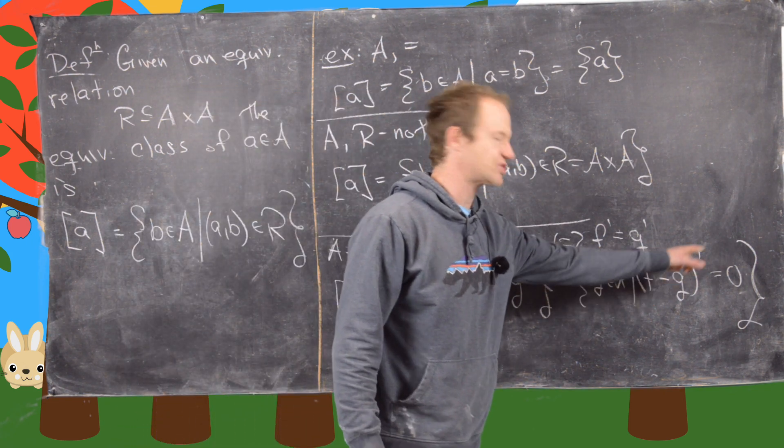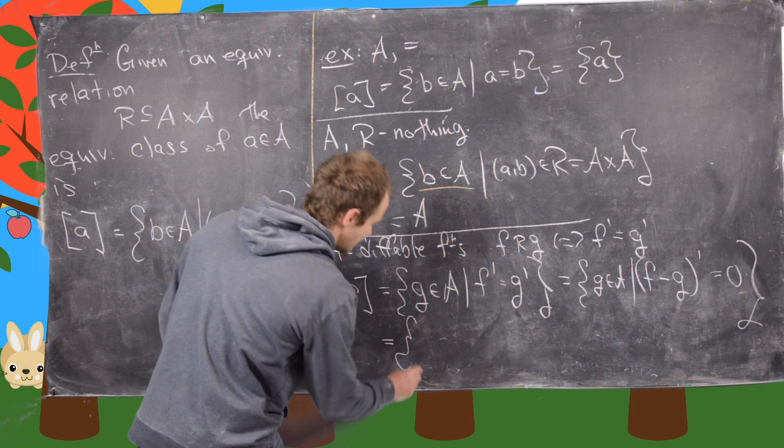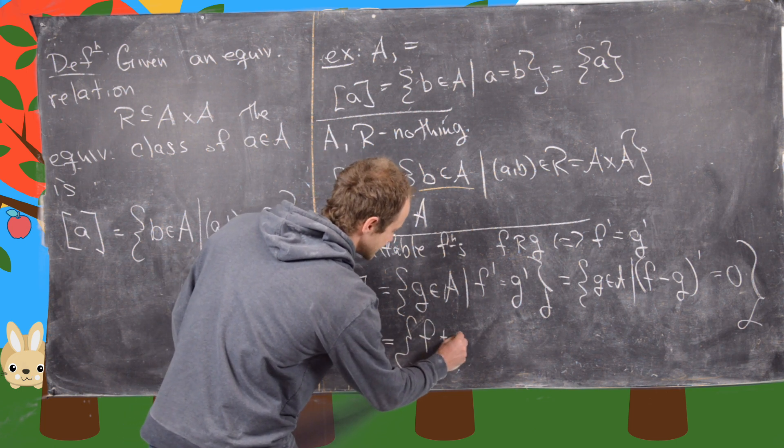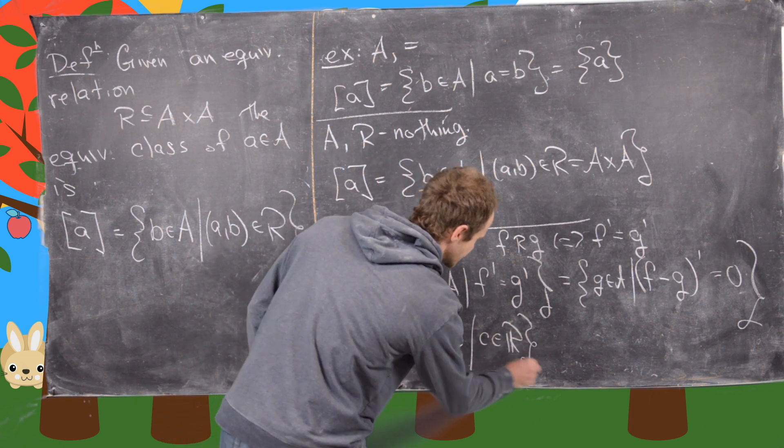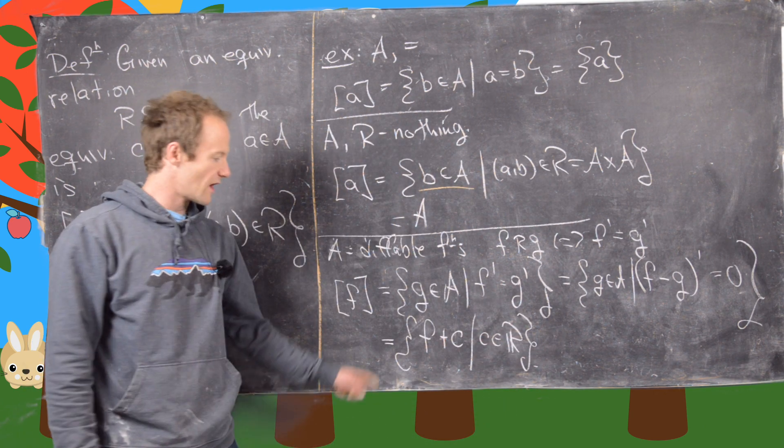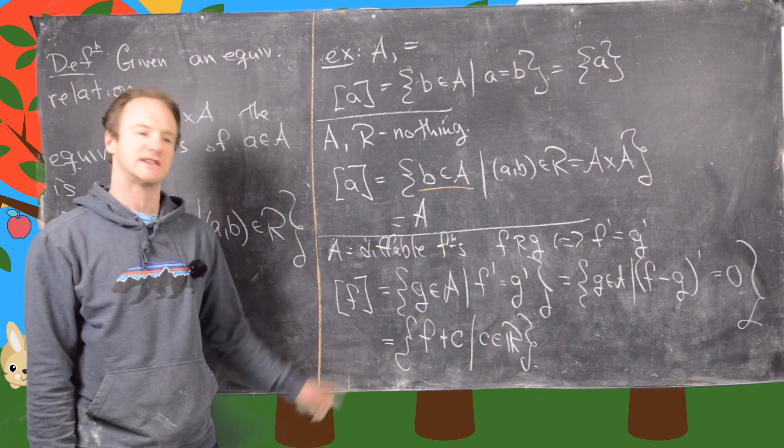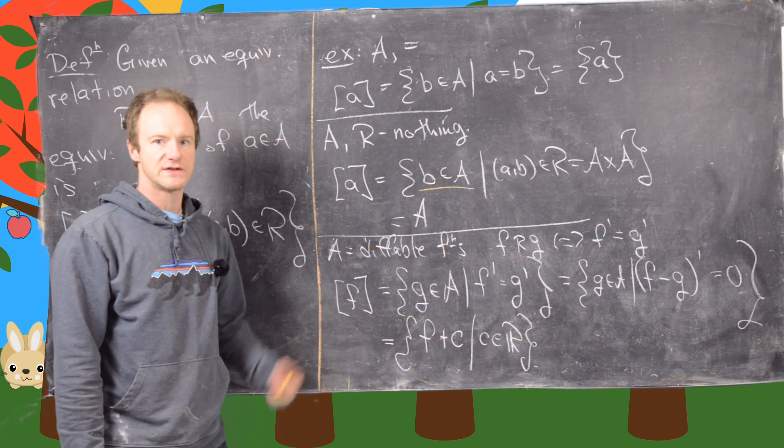But now we know that the only type of function whose derivative is zero is a constant. That means F minus G equals a constant. And so it follows that this is really just all of the functions F plus some constant C where that constant is just a real number. So in other words, it's just the function F plus some other constant. And this should look really familiar from integration.